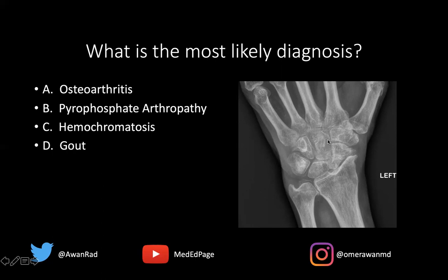Looking at the other findings, there are a lot of degenerative changes in the form of subchondral sclerosis, joint space loss, and osteophytes at the radiocarpal or radioscaphoid joint, and a little at the distal radio. There are subchondral cysts along the lunate and a little on the scaphoid, with relative preservation of the triscaphy and the first CMC joints. The articulation between the scaphoid, trapezium, trapezoid, and the trapezium with the base of the first metacarpal — those two joints are spared.